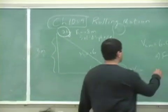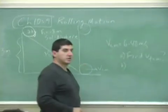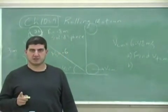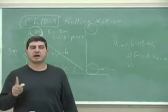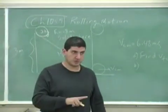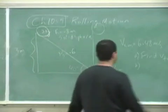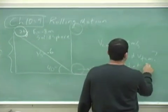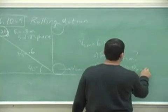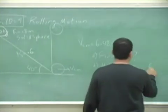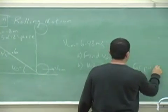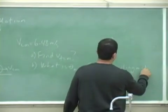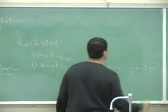And then my second question is going to be, what is the greatest angle that you can incline this such that the object still rolls nicely? So what is theta max for pure rolling motion? So we can answer that too.